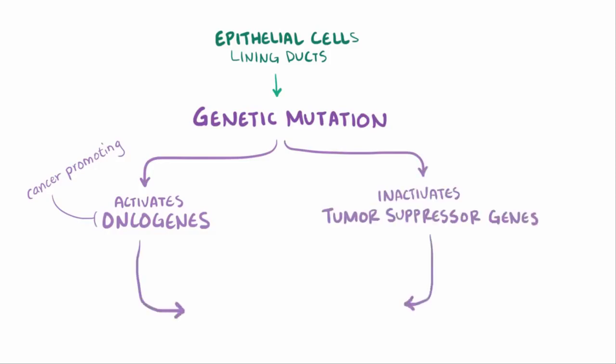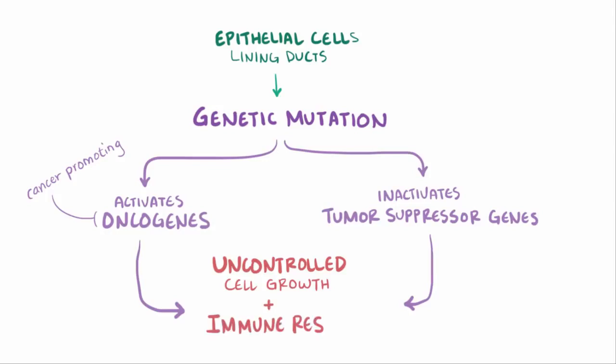Either way, this can lead to uncontrolled cell growth, caused by the disruption of the cell signaling pathways that regulate cell survival and growth, as well as multiple immune system responses like inflammation and stress responses.